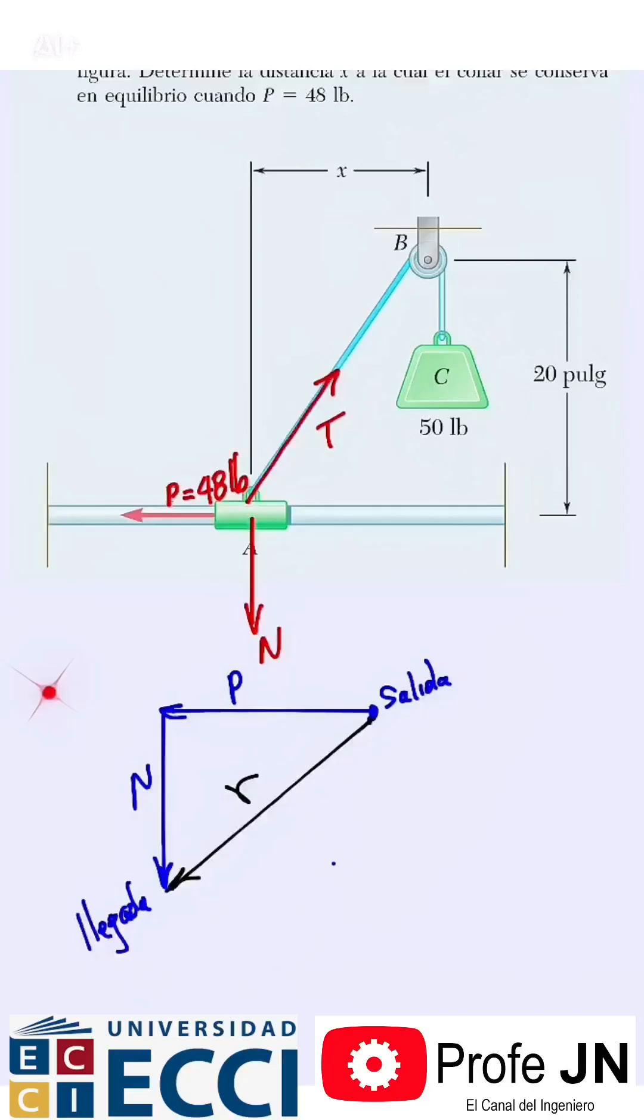The resultant R must be equal to the tension to balance. Now we have a right triangle, we can apply Pythagoras. What do we know? That the load P is 48 pounds to the left, and that the tension is 50. Because if this weight is 50, the entire tension of the cable is 50.